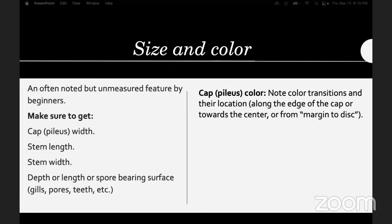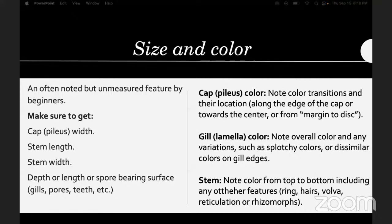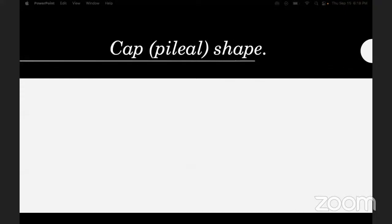For color, note the color of the cap or pileus and any color transitions and their location — is it red going to orange in the center or the opposite? Note the gill color overall and any variations such as splotchy or dissimilar colors on the gill edges. For the stem, note the color from top to bottom including any features like rings, hairs, vulva, reticulation, or rhizomorphs.